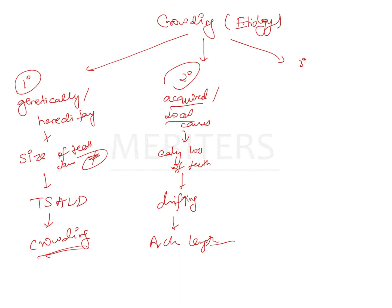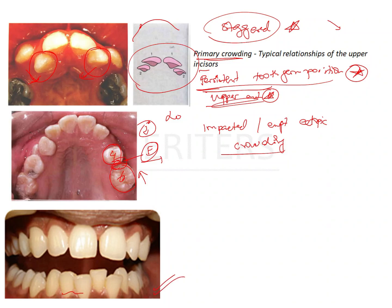Tertiary crowding is seen characteristically in adult patients when there is late mandibular incisor crowding. The etiology for this type has not been determined and is still debatable, because even adult patients who had no crowding in the lower anteriors have started showing crowding in the lower anteriors after reaching about 18 to 20 years of age.